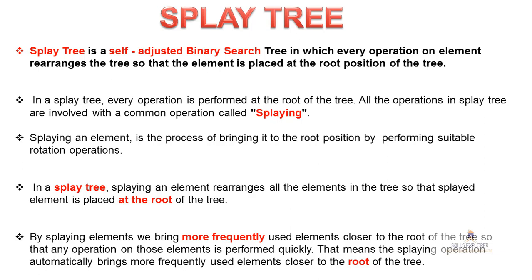All operations in a Splay Tree involve a common operation called Splaying. Splaying means bringing the element to the root position. To place the element at the root we need to perform rotations, but they are slightly different from AVL tree rotations. Splaying an element is the process of bringing it to the root position by performing suitable rotation operations. Splaying rearranges all elements so the splayed element is placed at the root.